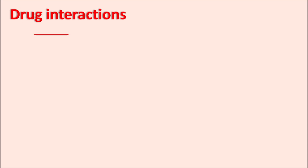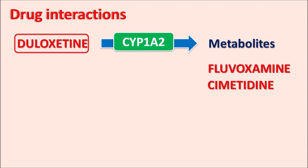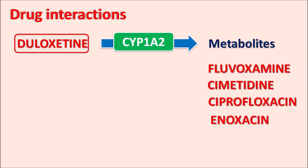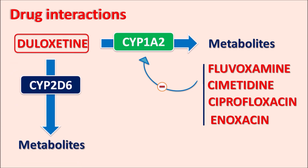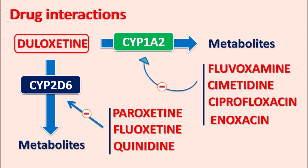What are the drug interactions? Duloxetine is metabolized by the cytochrome P450 system. One important metabolic enzyme is CYP1A2. Drugs like fluvoxamine, cimetidine (an H2 antagonist), ciprofloxacin, and enoxacin (quinolone antibiotics) can inhibit CYP1A2 activity, thereby increasing Duloxetine serum levels. Similarly, this drug is also metabolized by CYP2D6. Drugs like paroxetine, fluoxetine, and quinidine can inhibit CYP2D6 activity, thereby inhibiting the metabolism of Duloxetine. Notably, fluvoxamine can block both CYP1A2 and CYP2D6, which significantly inhibits the metabolism of Duloxetine and increases its serum levels substantially. These drug interactions should be closely monitored.